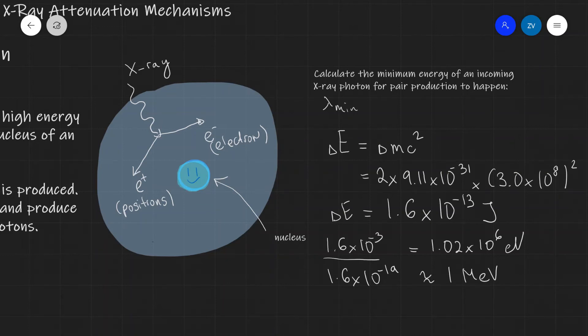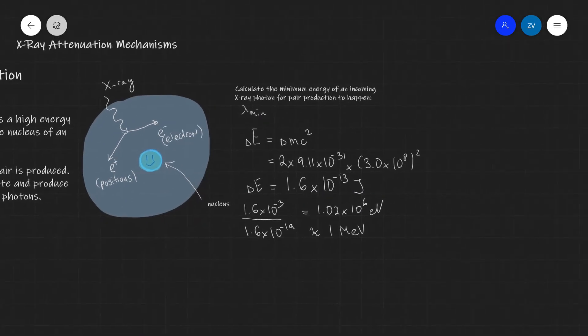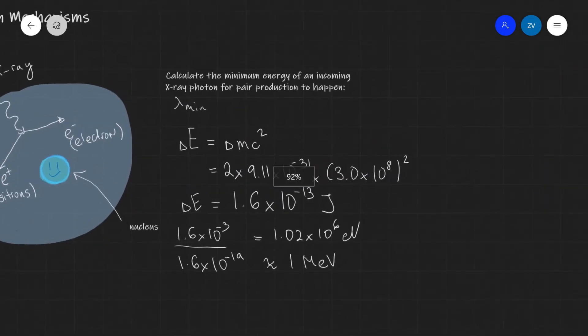So this number is actually really, really important. This is the minimum energy of an incoming X-ray photon for a pair production to occur. We could even take this a step further and we can calculate the wavelength of this X-ray photon. Let's do this one over here on the side.